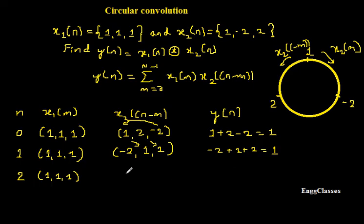So next put n equal to 2. If I put n equal to 2 I am going to get x2(2-m). Take the sample, shift it one more time. So whatever 2 you have shifted to the extreme left you will get 2. So these samples you keep on shifting it to the right. So this got shifted here.